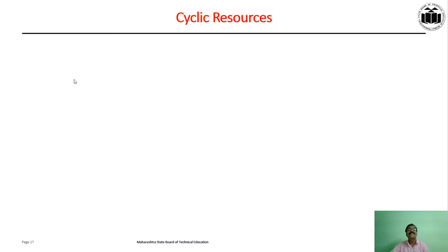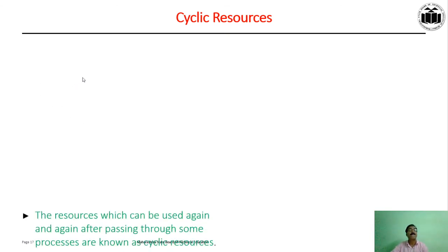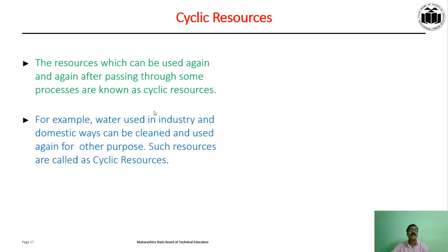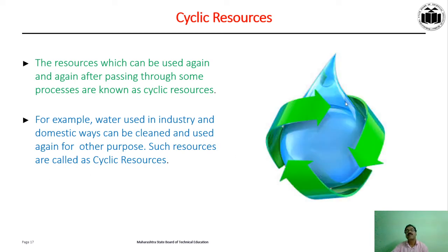The last resource type is cyclic resources. Resources which can be used again and again after passing through some process are known as cyclic resources. For example, water used in industry and domestically can be cleaned and used again for other purposes. Water is a good example of cyclic resources.